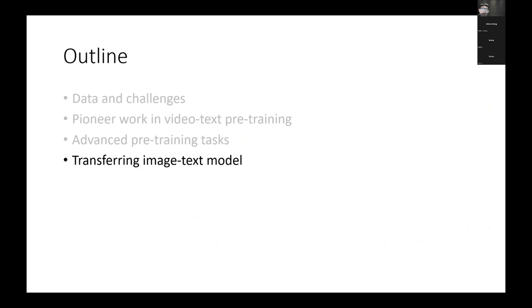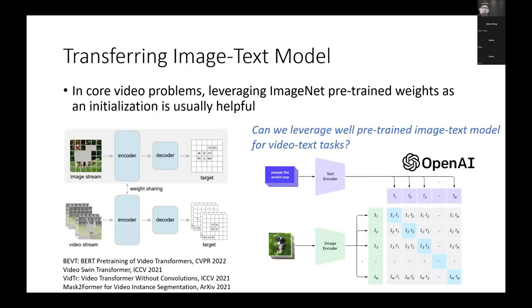Finally, I will talk about the exciting direction of leveraging image-text models. In core video problems, researchers found it is very helpful to use ImageNet pre-trained weights for initialization and then fine-tune to video tasks. An intuitive question is: can we also leverage well pre-trained image-text models for video-language tasks?